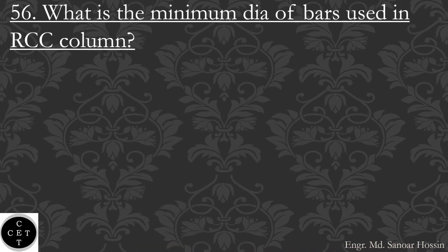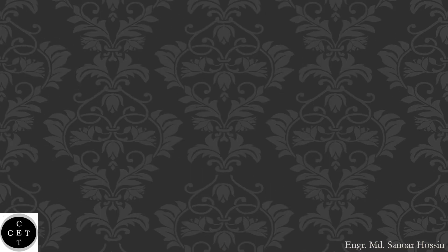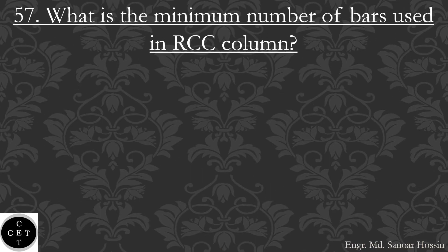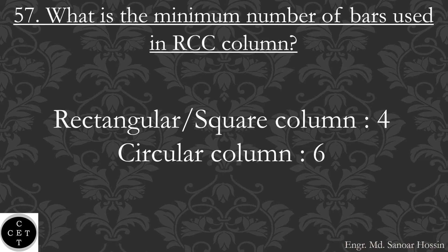Question number 56: What is the minimum number of bars used in an RCC column? For a rectangular or square column: 4 bars. For a circular column: 6 bars.